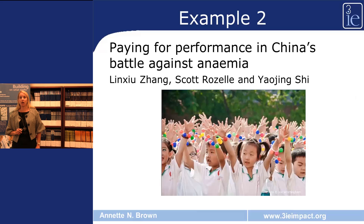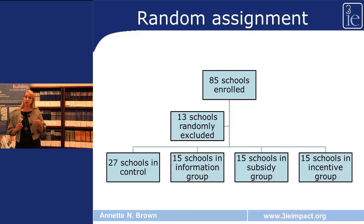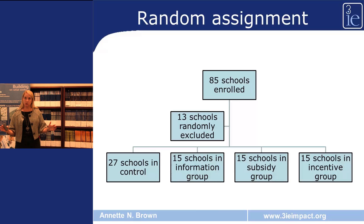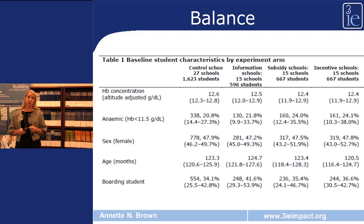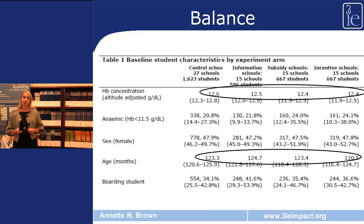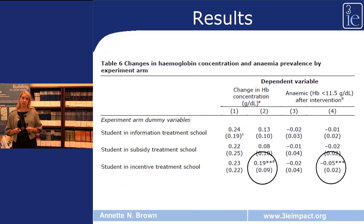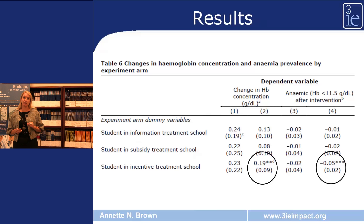Another example comes from China, where an intervention aimed to improve nutrition through schools to reduce anemia. Here, random assignment occurred at the level of the school — 85 schools were originally enrolled — with one control group and three different treatment groups. The balance table at baseline shows that across all four groups there was roughly a hemoglobin level of 12 and an age of 123 to 124 months. With this balance, we can clearly compare the results: one of the three treatments — the incentive treatment — showed a clear increase in hemoglobin level and a clear reduction in anemia.